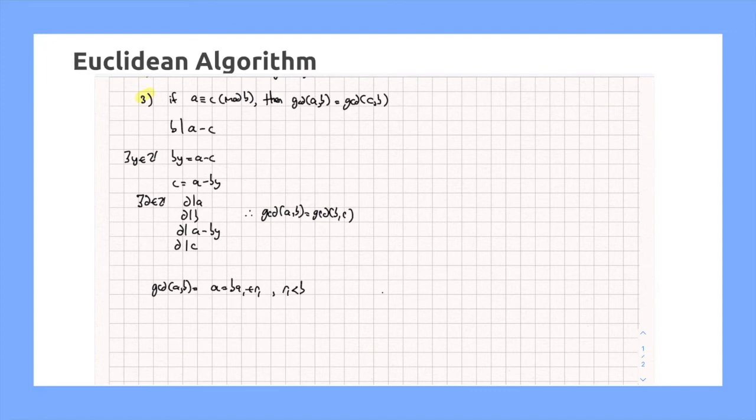We have, from this part over here, that GCD of AB is equal to the GCD of B comma R1.